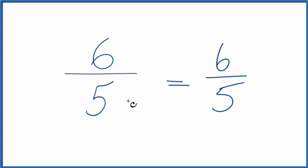So the fraction 6 fifths, it's already in lowest terms. It's already simplified. It is an improper fraction in that the numerator is larger than the denominator. So you could change it to a mixed fraction. Let's do that.